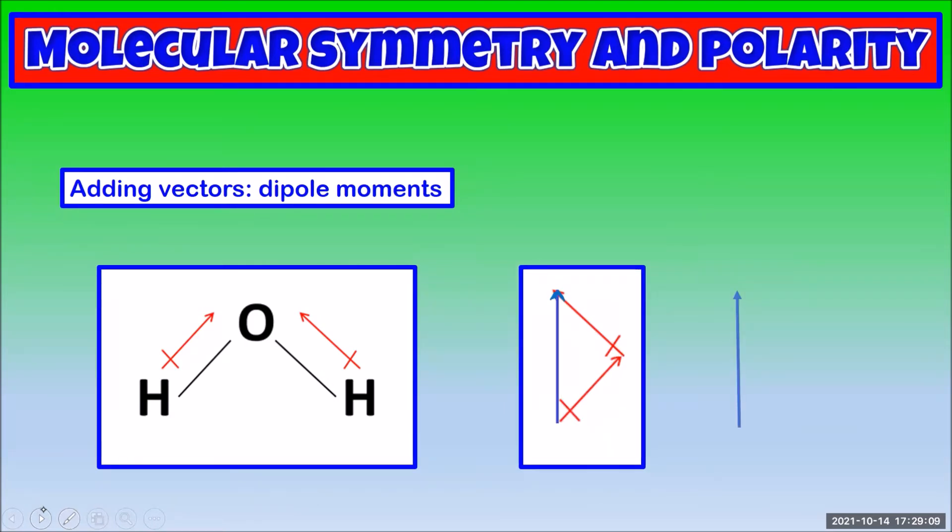Redraw the overall vector on its own, and remember charge vectors point towards the negative. We can see this means the water molecule has a positive and a negative end. The water molecule is polar.